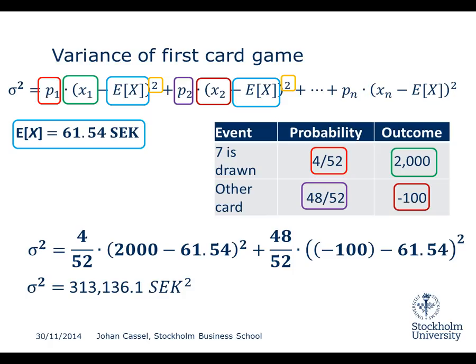We find that the variance is 313,136.1 Swedish Kronor squared — which is a very odd unit. What is a squared Swedish Kronor? That's why we usually use the standard deviation instead of the actual variance. And again, the Pn xn part only applies if we have more than 2 events; then you would keep adding terms in the same manner.